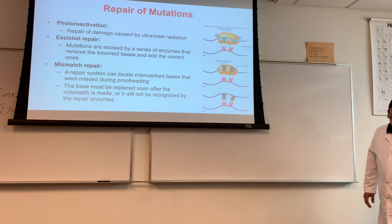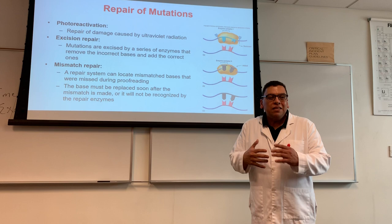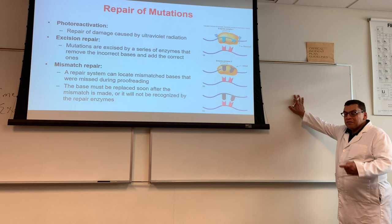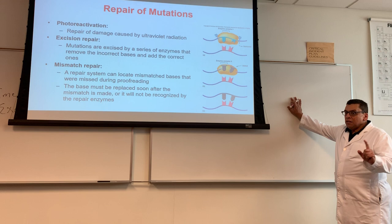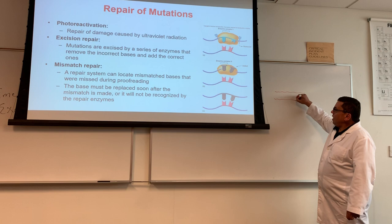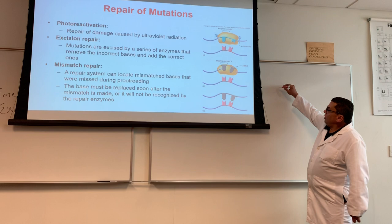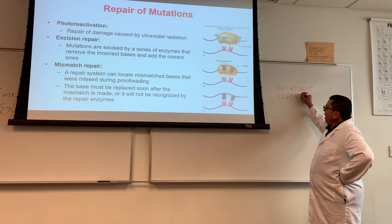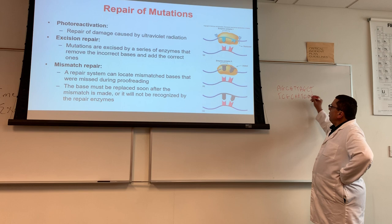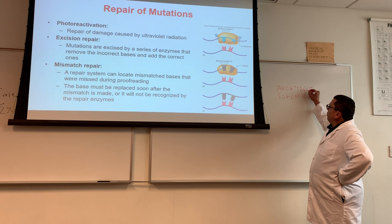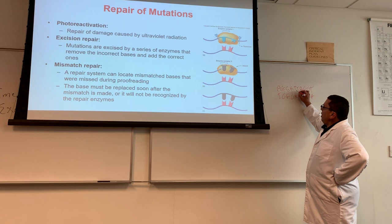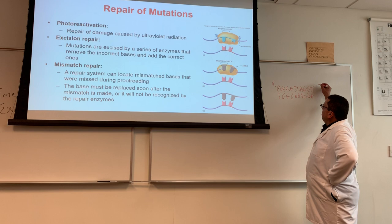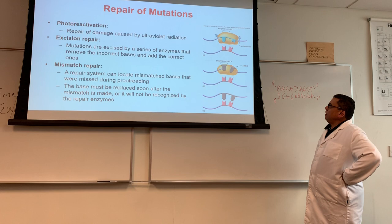Before describing photoreactivation, I need to explain how UV damages DNA, because photoreactivation is usually used for fixing UV-damaged DNA. For example, a DNA sequence such as A-G-C-G-T-T-A-G-C-T, with its complementary strand T-C-G-C-A-A-T-C-G-A — all phosphodiester bonded within each strand and hydrogen bonded between strands, antiparallel.